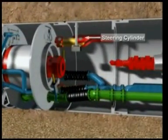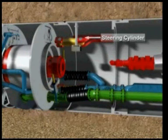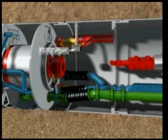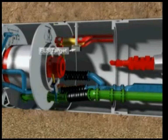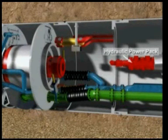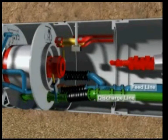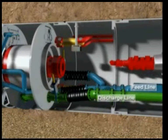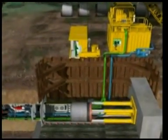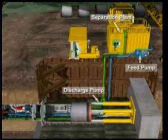The steering cylinders are situated in the first machine pipe and are used to adjust the direction of the cutter head with millimeter precision, making it possible to correct the line and level. In addition, a laser target is located in this machine pipe for determining the position of the machine. Power for the steering cylinders and cutting wheel drive are provided by the hydraulic power pack. The feed and slurry lines are equipped with compensators to block vibration movements and to realize a length compensation.